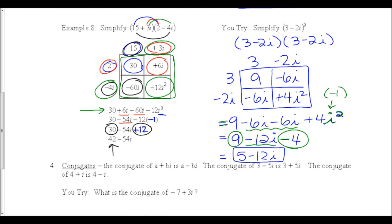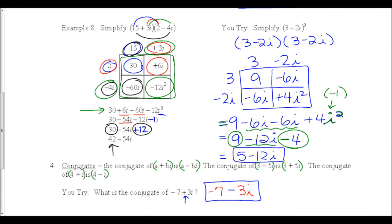Now let's talk about conjugates. The conjugate of a plus bi is a minus bi. For example, the conjugate of 3 minus 5i is 3 plus 5i, and the conjugate of 4 plus i is 4 minus i. When finding the conjugate of negative 7 plus 3i, all that changes is the sign in between the two terms, so the answer is negative 7 minus 3i.